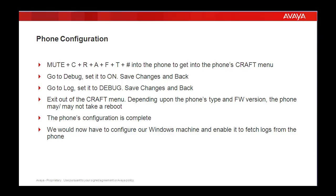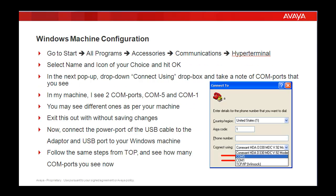Now we shall go back into our Windows machine and create the HyperTerminal configuration to fetch the logs. Go into Start, All Programs, Accessories, Communication, HyperTerminal. Choose a name and icon of your choice and hit OK. The next pop-up is something similar to what is presented on this slide. Look into the 'Connect using' drop-down — you may find a few COM ports. In my laptop, I found COM1 and COM5.